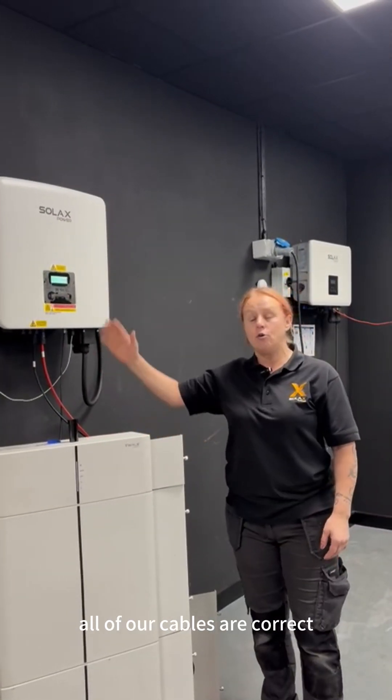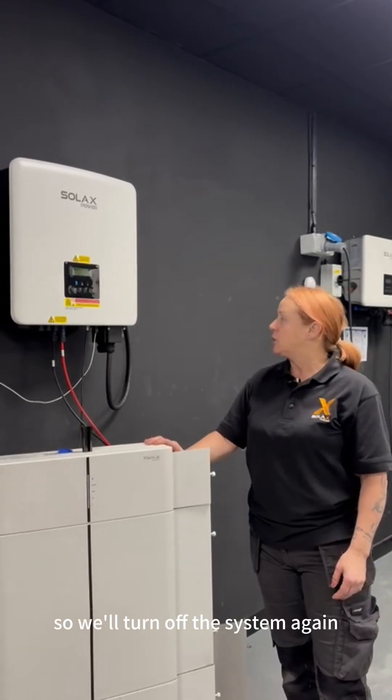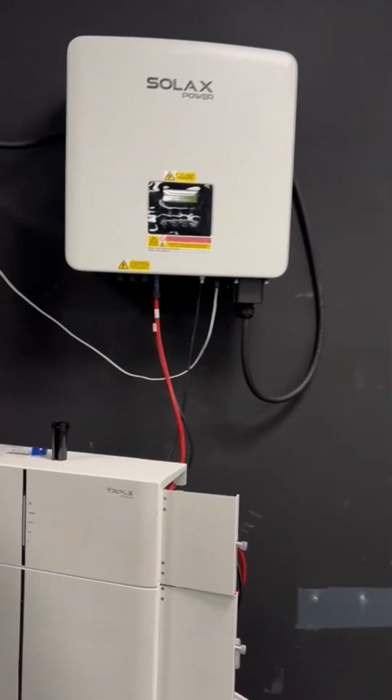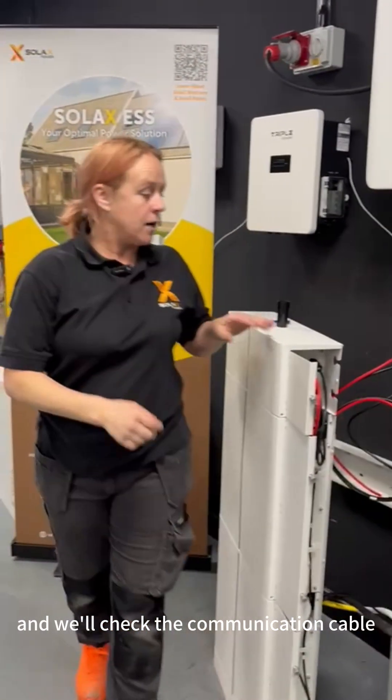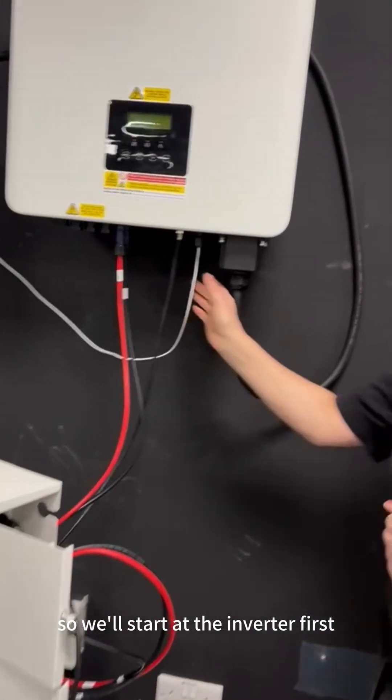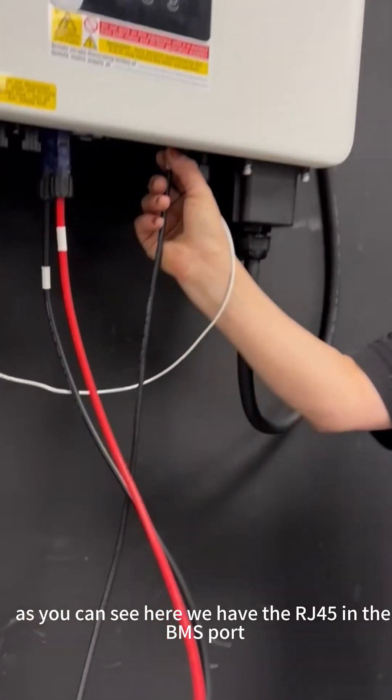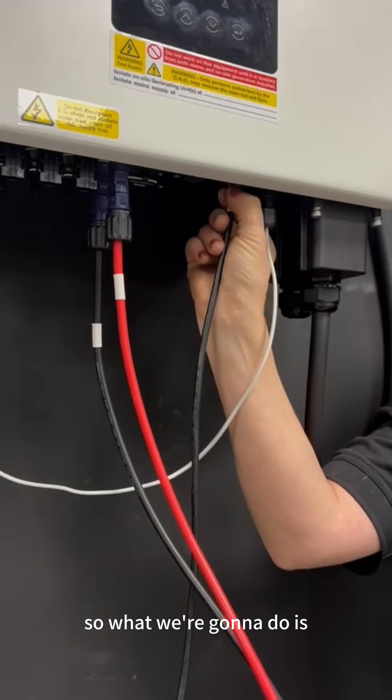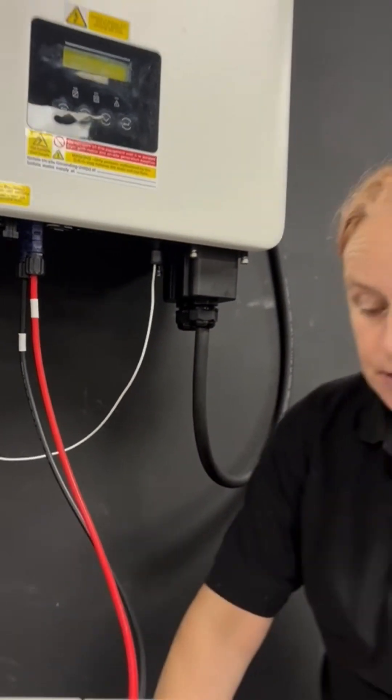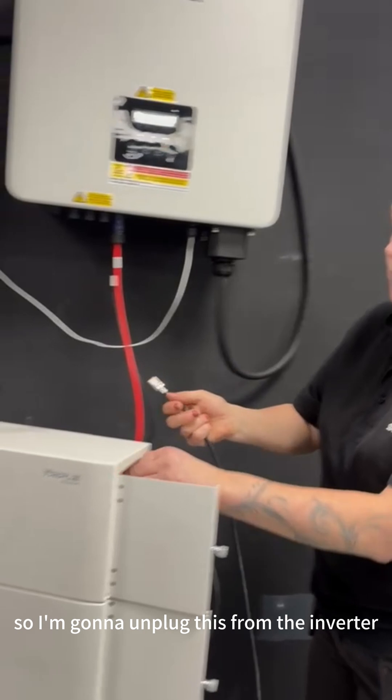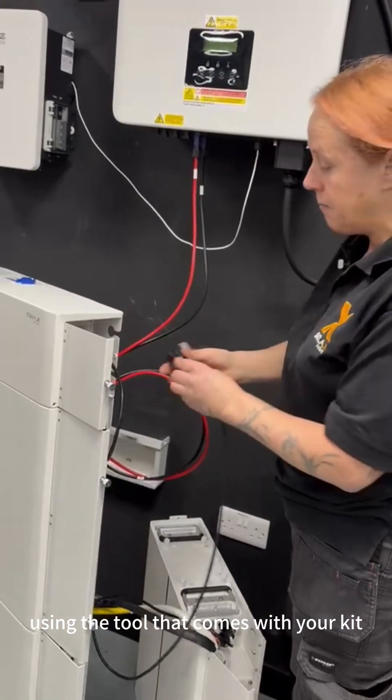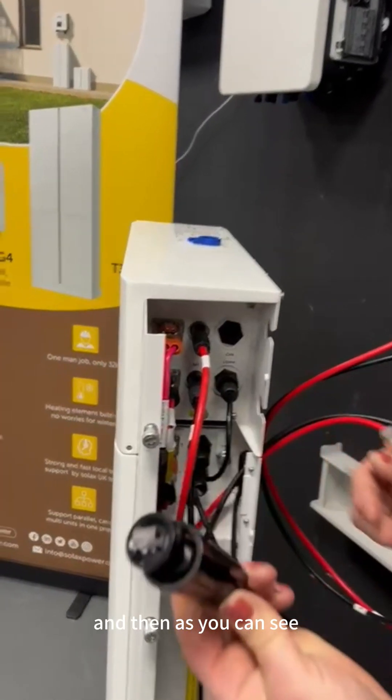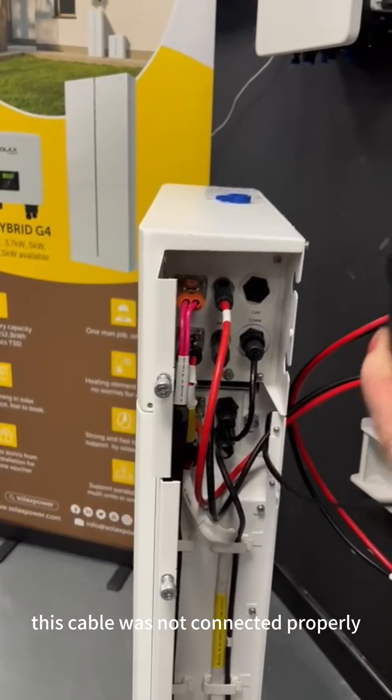In normal mode, these lights will be flashing green every five seconds. So because we're not working, we now need to verify that all of our cables are connected correctly. So we'll turn off the system again and check the communication cables. We'll start at the inverter first. As you can see here, we have the RJ45 in the BMS port. However, we do not have the IP cap on.